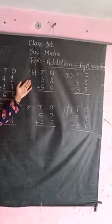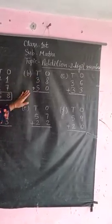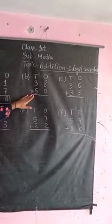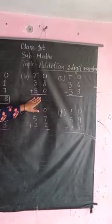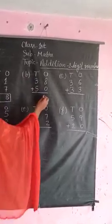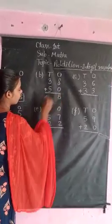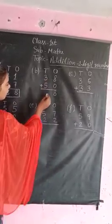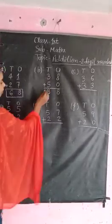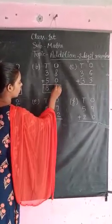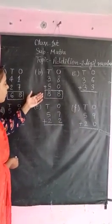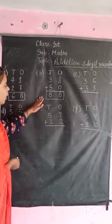Next, number is 38 plus 50. 38 plus 50. Addition is 8 plus 0 equals 8, 3 plus 5 equals 8. 38 plus 50 equals 88. Total number is 88.